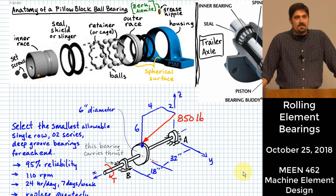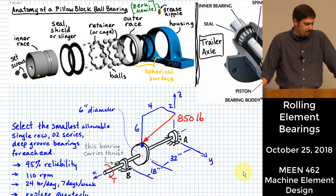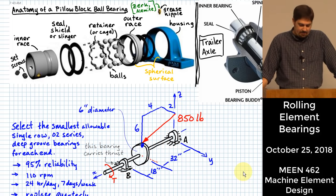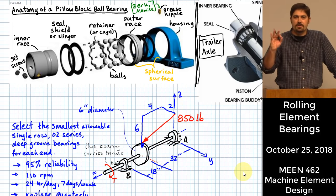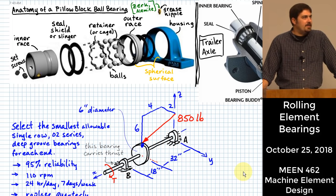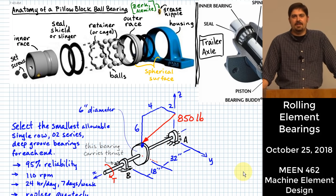Let's talk about some bearings. We are moving into chapter 11 in the textbook. This is a really common machine element that you have probably seen in several different contexts — machine elements where we use rolling elements, like balls or little cylindrical parts or even cone-shaped parts, set up to allow a bearing to roll. Ball bearings, roller bearings, needle bearings — these are all examples of rolling element bearings.